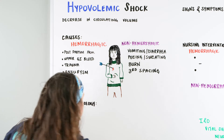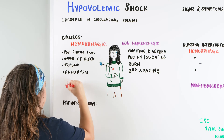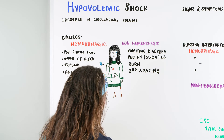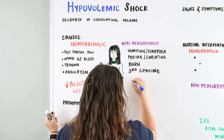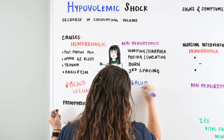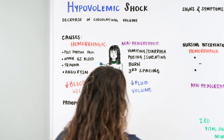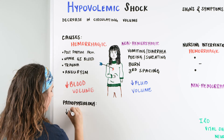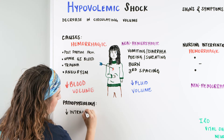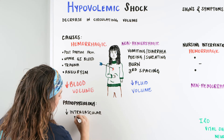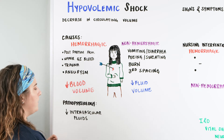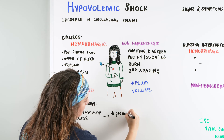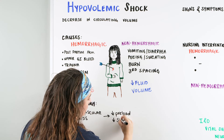Either they're going to have hemorrhage, which is a decrease in the blood volume, or we'll have a patient that is decreasing in their fluid volume. What we're really looking at here is a decrease in the intravascular fluids. Because of this, we're going to have a decrease in our preload to the heart and then a decrease in our stroke volume.